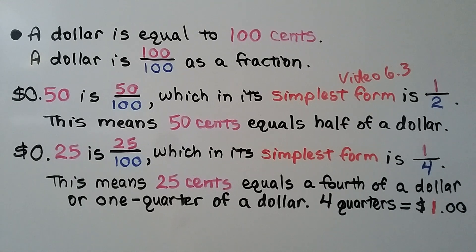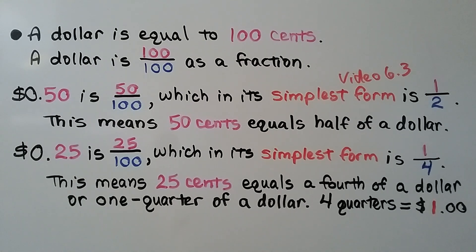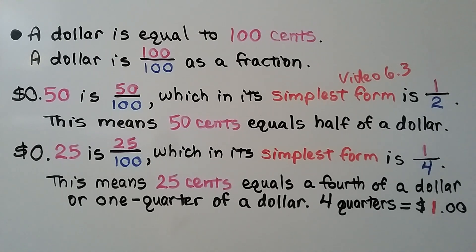A dollar is equal to 100 cents, or 100 hundredths as a fraction. 50 cents is 50 hundredths, which in its simplest form is 1 half. This means 50 cents equals half of a dollar. 25 cents is 25 hundredths, which in its simplest form is 1 fourth. This means 25 cents equals 1 fourth of a dollar, or 1 quarter of a dollar. That's why 4 quarters are equal to 1 dollar.